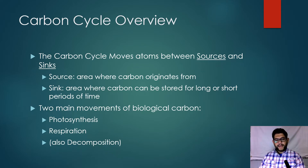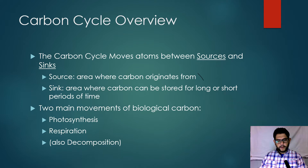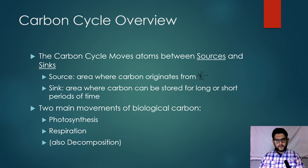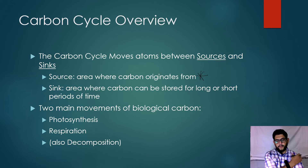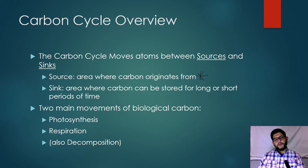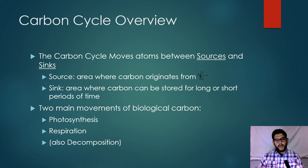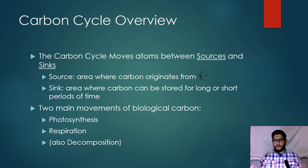As carbon moves through the cycle, the key terms to remember are sources and sinks. A source is where the carbon originates from — where it was stored and put away, and then how we get it back into the atmosphere. A sink is where carbon can be stored for a long or short period of time — some sinks for hundreds of years, some for millions. The two main forms of biological carbon are photosynthesis and respiration, and also decomposition, which plays a big role and can produce gases such as methane or CO2.